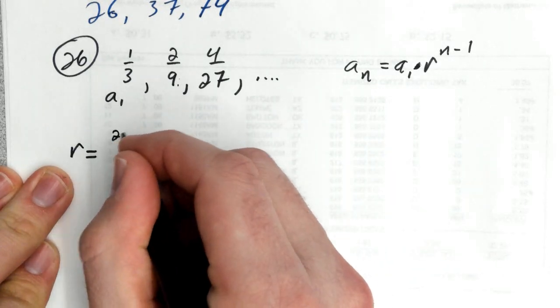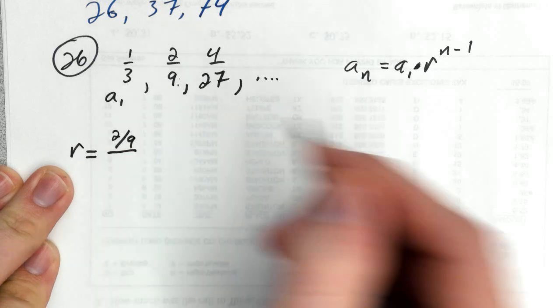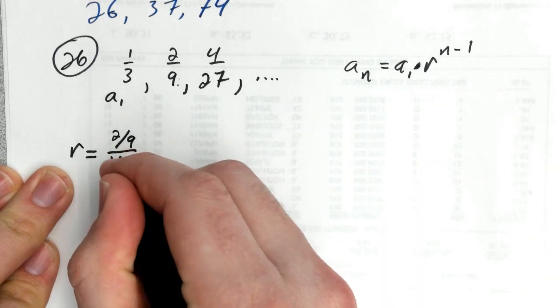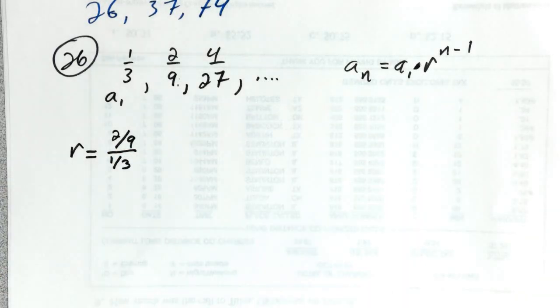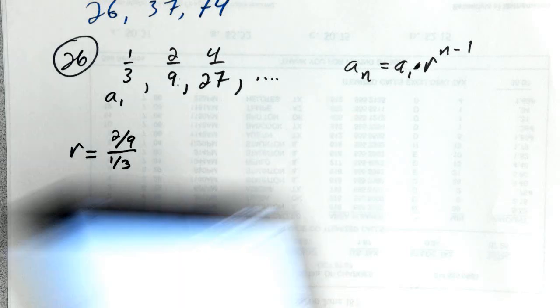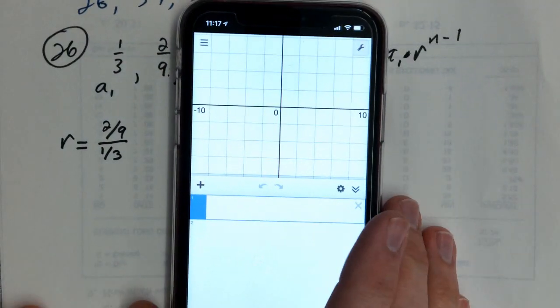So we'll take 2 ninths divided by 1 third, and Desmos will happily figure this out for you, and probably even give it to you as a fraction if you ask nicely.